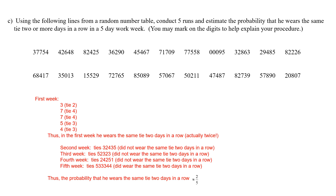In the third week, the ties are 5, 2, 3, 2, 5 — he did not wear the same tie two days in a row. The fourth week, he also did not wear the same tie two days in a row. In the fifth week, he did end up wearing the same tie two days in a row. So the estimated probability of him wearing the same tie two days in a row is 2 out of 5.